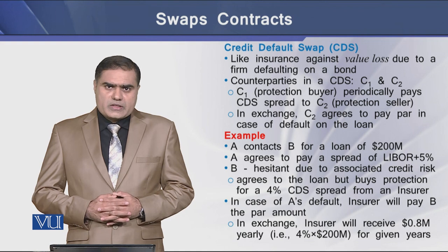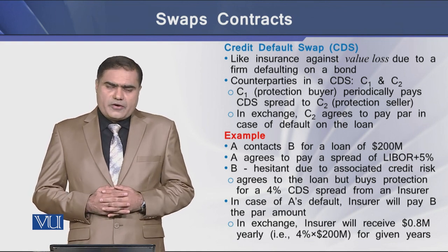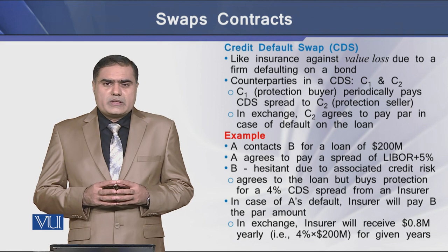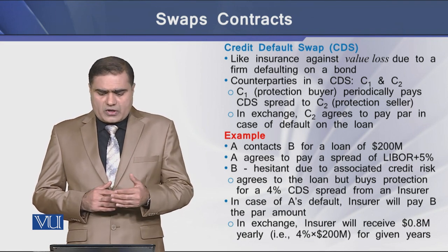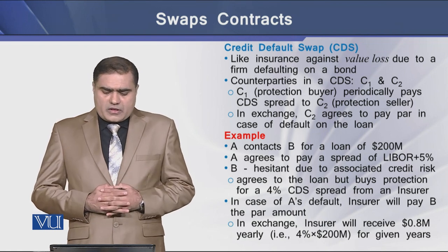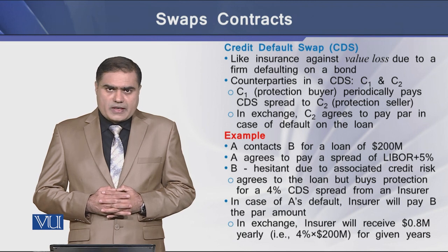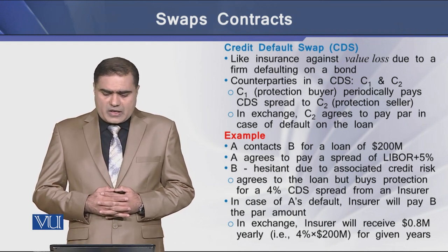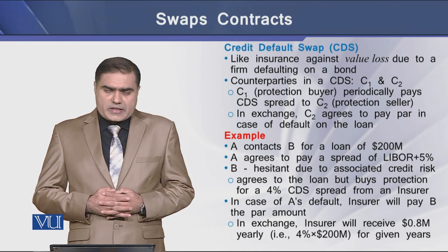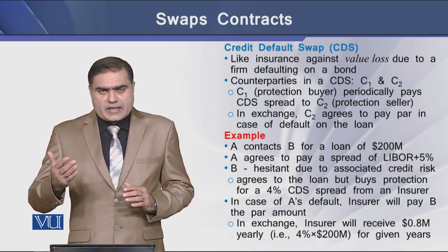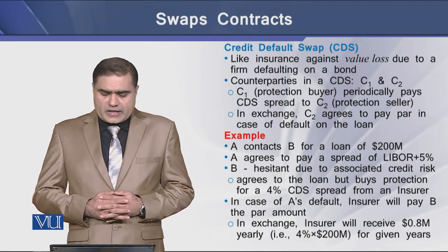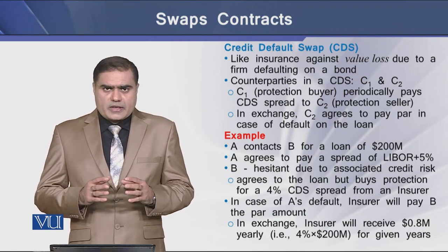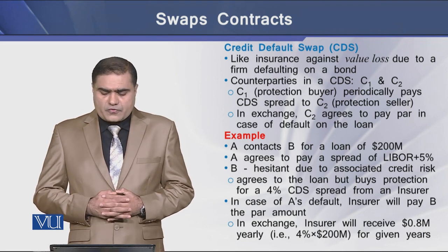The third type of swap is the credit default swap, or CDS. In fact, a CDS is just like an insurance against a value loss due to the chance that a firm may default on a debt. In a CDS there are two types of counterparties: C1 and C2. C1 is the protection buyer, which periodically pays the CDS spread to C2, the protection seller. In return, C2 agrees to pay at par some amount in case of default on the loan.